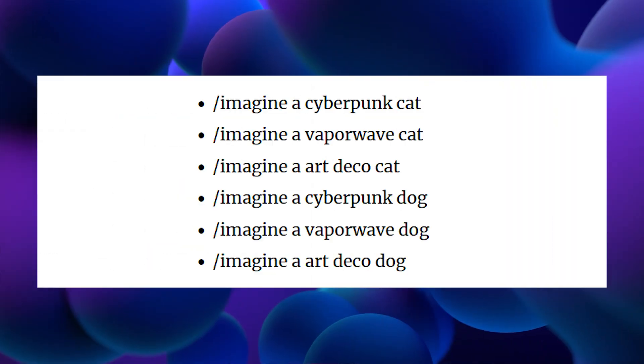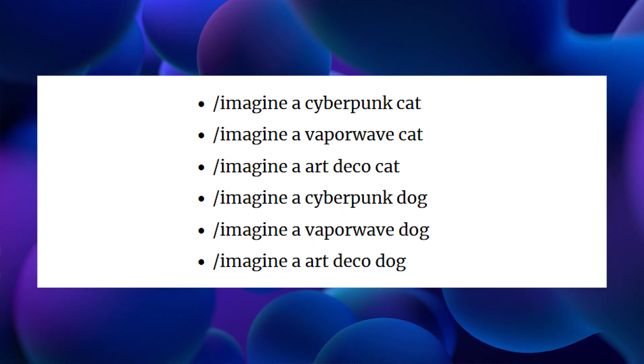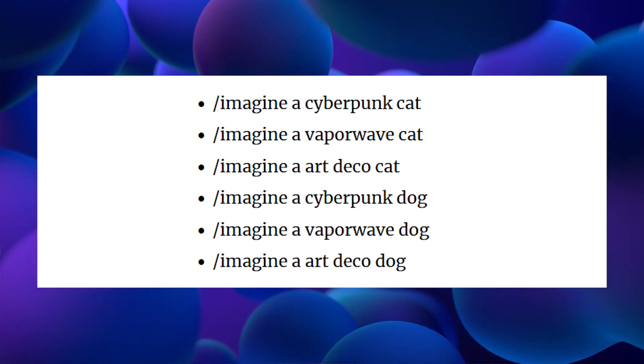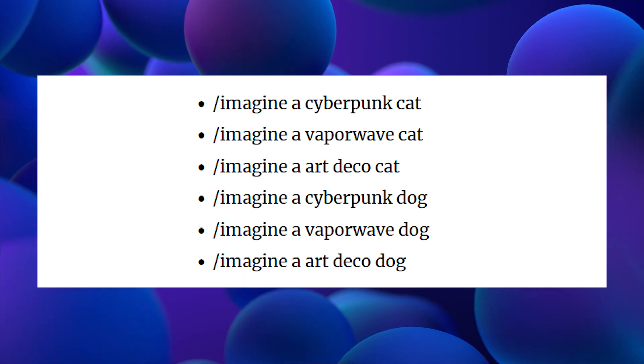Once you execute this prompt, instead of a single prompt that Midjourney regularly uses, it is going to execute six new jobs by creating permutations and combinations of the items in these curly braces. It will treat the prompt as six new prompts: imagine a cyberpunk cat, imagine a vaporwave cat, imagine an art deco cat, and then all three styles applied to the dog. I hope this basic example makes clear what permutation is all about.